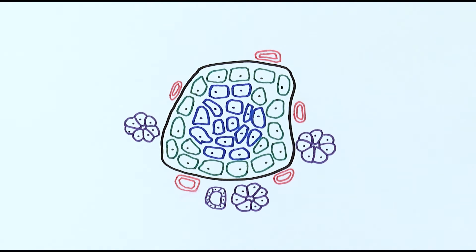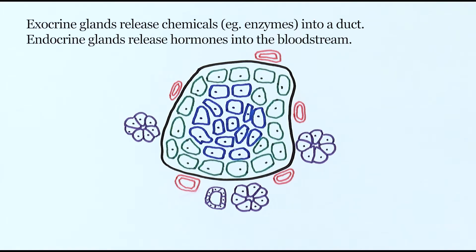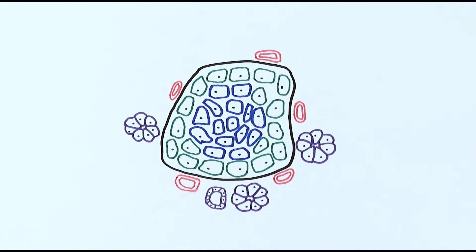The pancreas can have an exocrine function and an endocrine function. The exocrine function is namely the digestive enzymes, whereas the endocrine function is the release of hormones, usually specifically to the bloodstream. In an exam question you might be given a microscopic image of the pancreas and be asked to label or recognize specific parts and tell the functions of them. We'll look at the exocrine and endocrine bits.